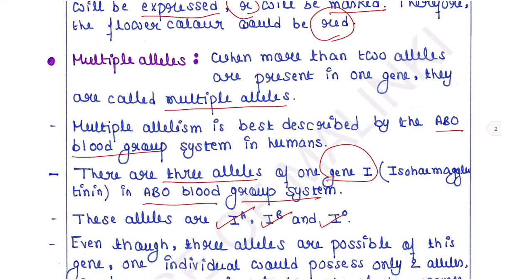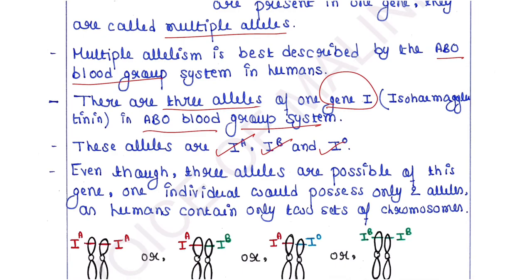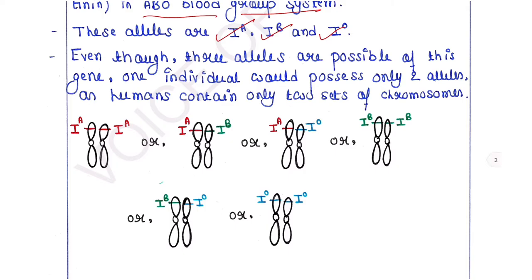These are multiple alleles because this gene contains more than two alleles. Even though three alleles are possible for this gene, one individual would possess only two alleles, as humans contain only two sets of chromosomes. Therefore the combinations of alleles would be: IAIA, IAIB, IAIO, IBIB, IBIO, or IOIO — so these six types of combinations are possible.